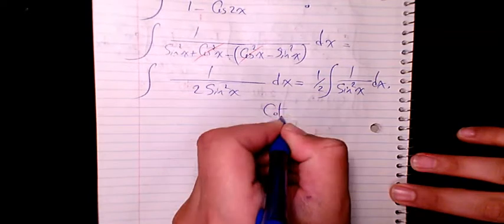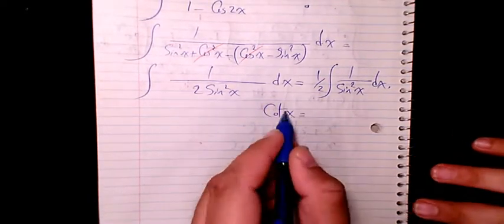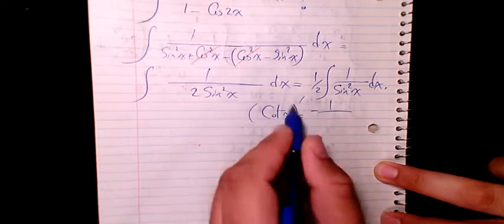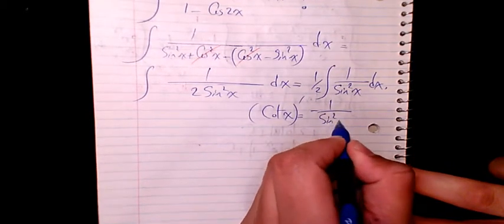And then I can say cotangent x, the derivative of cotangent x is negative 1 over, the derivative of cotangent is 1 over sine squared x dx.